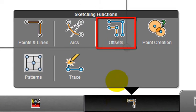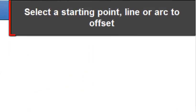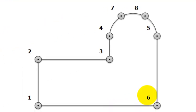Select offsets from the sketching functions menu. The info panel advises to select which elements to offset. Either points or lines can be selected. In this case, each individual line shall be selected.